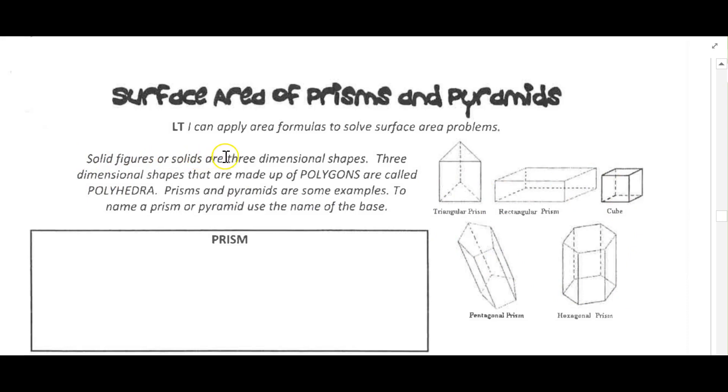Solid figures or solids are three-dimensional shapes. Three-dimensional shapes that are made up of polygons are called polyhedra. Prisms and pyramids are some examples. To name a prism or a pyramid, use the name of the base.